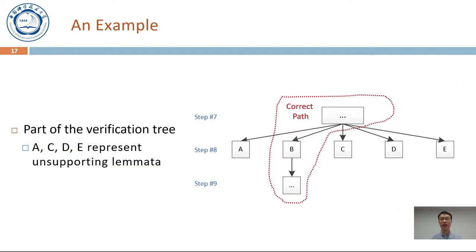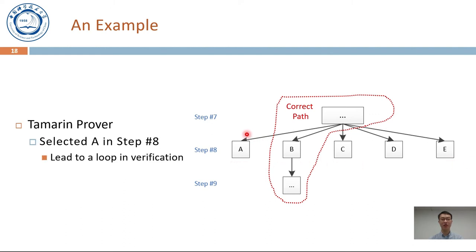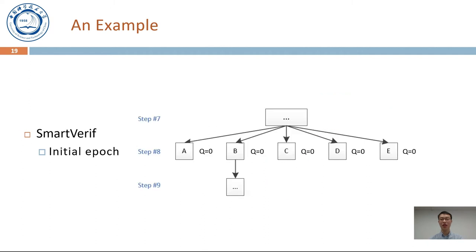Here, we illustrate a part of the verification tree. The selection in step number 8 on the correct proof path is B, while selecting other nodes leads to non-termination. However, the default strategy of Tamarin Prover selects A in this step. Since A contains un-supporting lemma, it leads to a loop in verification. In contrast, in our tool, we achieve successful verification.